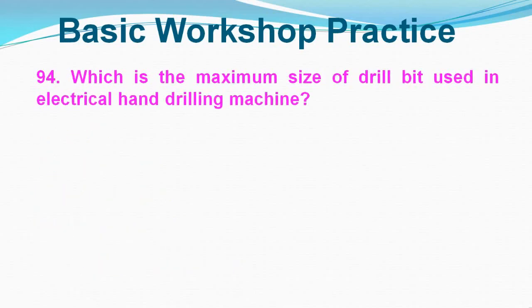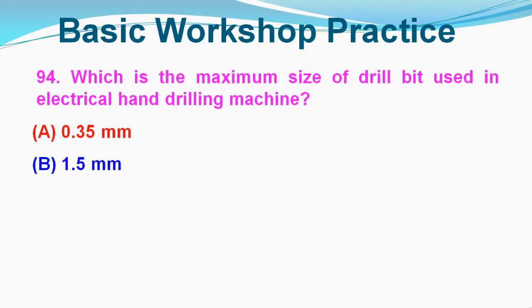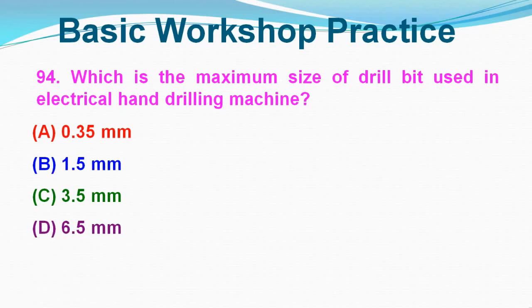Question No. 94: Which is the maximum size of drill bit used in an electrical hand drilling machine? Option A: 0.35 mm, Option B: 1.5 mm, Option C: 3.5 mm, Option D: 6.5 mm. Correct answer is Option D, 6.5 mm.